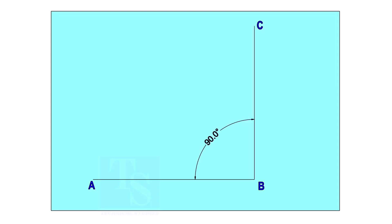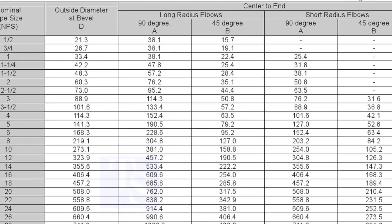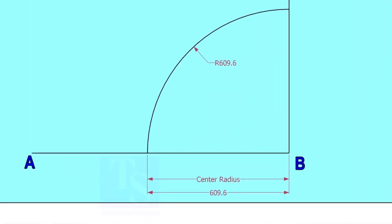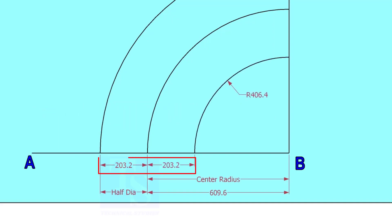Mark line AB and a perpendicular line BC. Let us check the center radius of 16-inch long radius elbow. Draw an arc with the center radius 609.6 millimeters. Mark the half OD arcs on both sides of the center line.